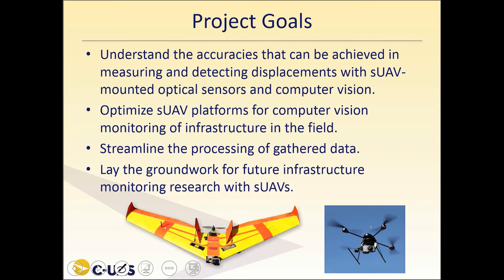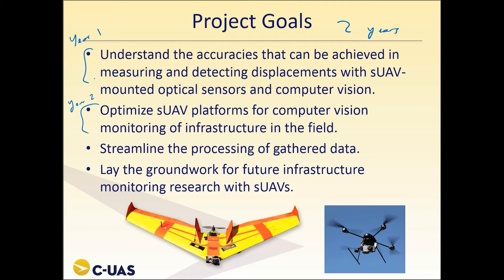I'm going to talk about project goals for this project with the Center for Unmanned Aircraft Systems. We have a two-year project that we're proposing. In the first year we're essentially going to refine the technologies in a very controlled laboratory environment, and then in the second year use those developments to apply them to flight tests and other situations — specific pipelines, levees, dams, et cetera. We're going to be laying the groundwork for this vision technology specifically with infrastructure monitoring in mind.